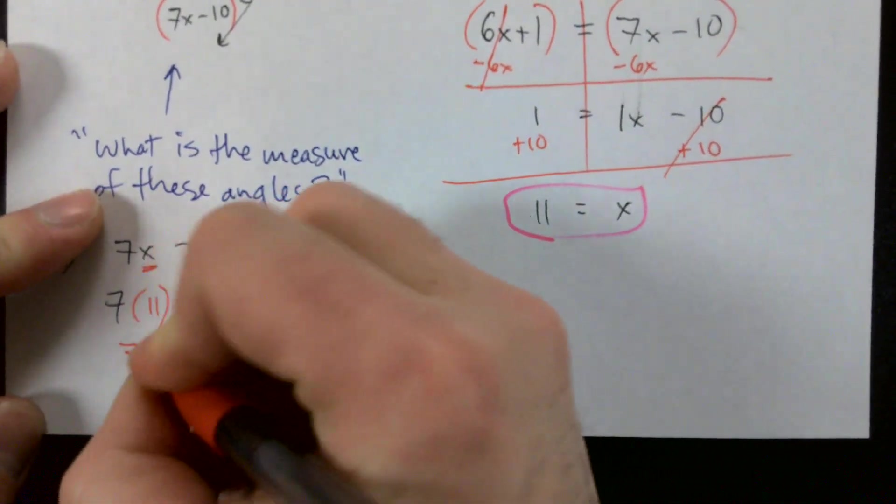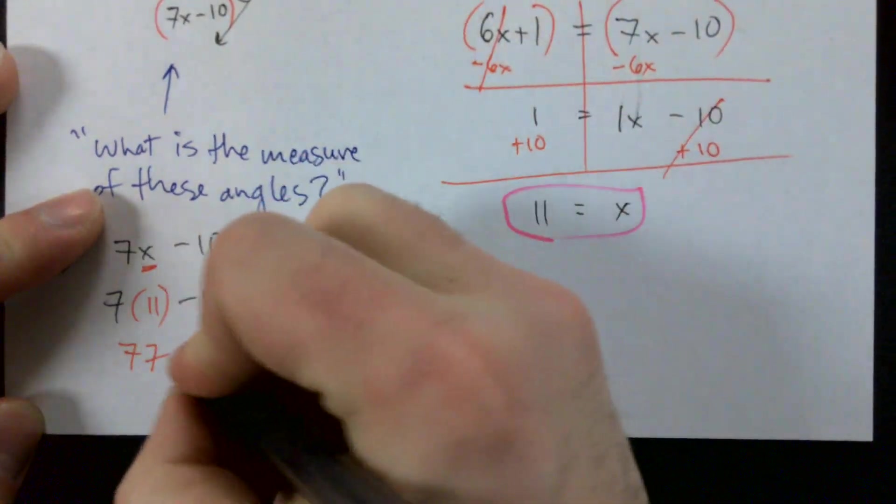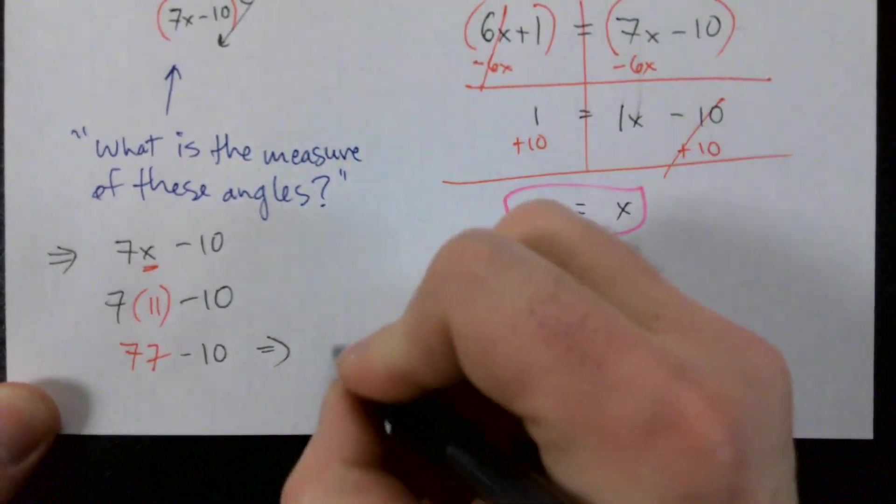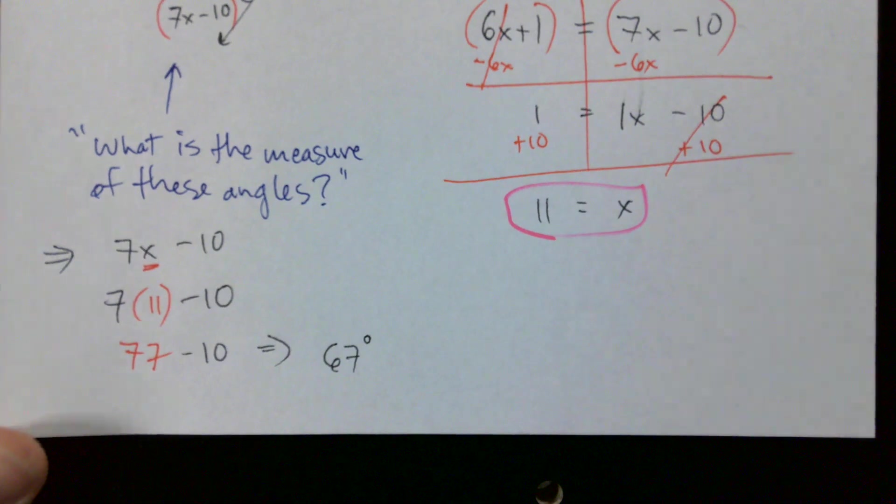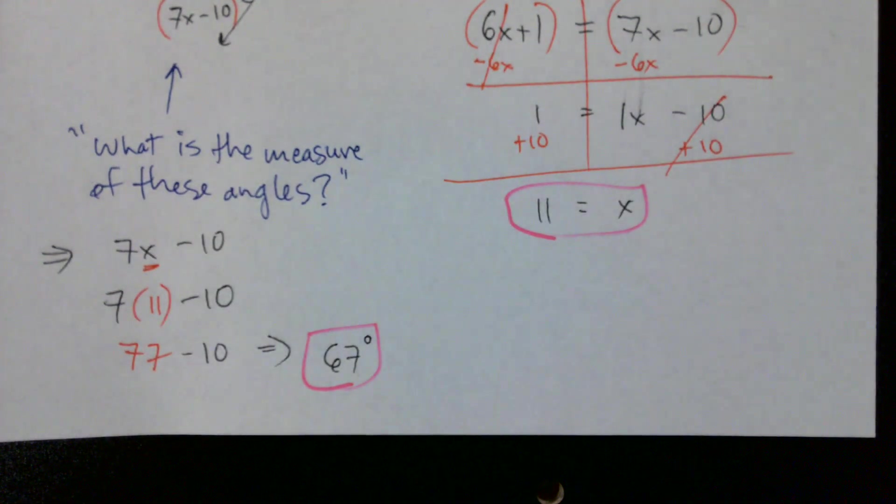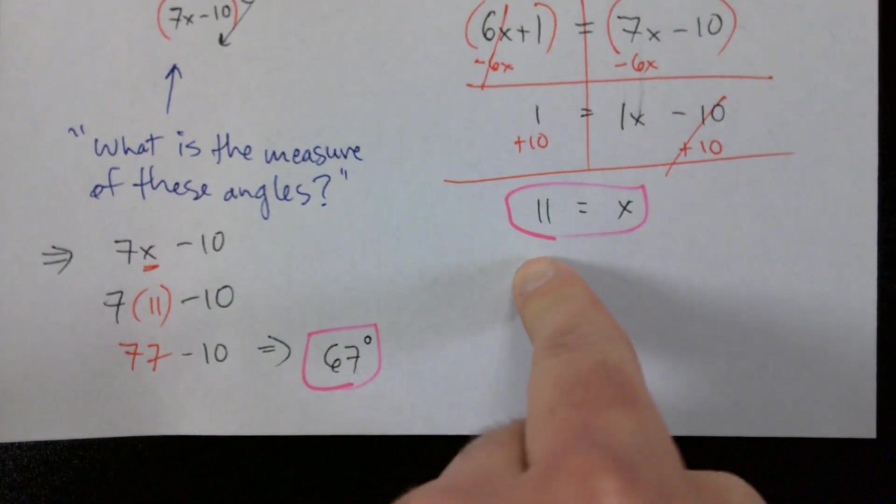We're just going to replace that variable x with the x that we found and then simplify. So 7 times 11 gives us 77, and then what's 77 minus 10? 67 degrees. That's right. Now we actually do have to put degrees when we're defining what an angle measure is, but we don't need degrees when we're talking about what x is equal to.